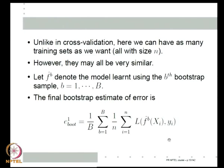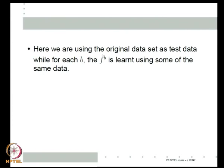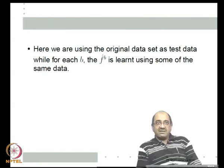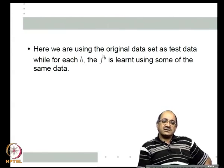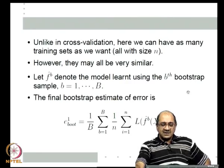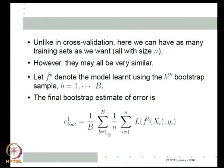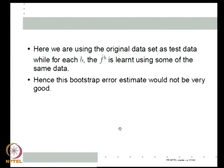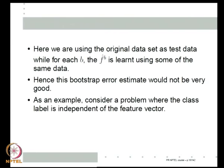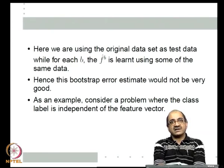There is one problem with E1_boot: essentially, for each model f̂_b we are using the entire original data set as a test set, but for learning f̂_b we used some of those same data points. Because f̂_b used some of the x_i, y_i for learning, this error estimate is likely to be very poor. Let us take an extreme case where the feature vector and the class label are independent — meaning with probability 0.5 it is class 1, and 0.5 probability the other class.